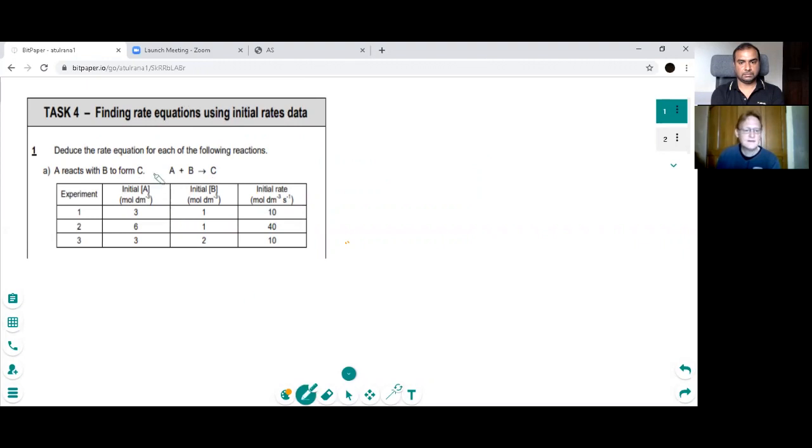So the first thing we'll have a look at is A. And we see for experiments 1 and 2, the concentration of B is staying the same. The concentration of A is doubling, so that's times by 2. Now if we look at the effect of doubling that on the rate, we can see that the rate has quadrupled or times by 4, which is times 2 to the power 2. And therefore A is second order.